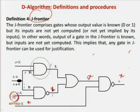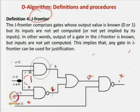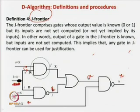In the implication procedure, initially everything is x. For example, for a stuck-at-0 fault on net b, we apply 1, so immediately those nets become D and D. But we do not yet know the values of other nets such as c, d, and a — those must be determined using D frontiers and J frontiers. The implication procedure finds values that can be directly computed, like the fan-out branch that is independent of the fault branch.